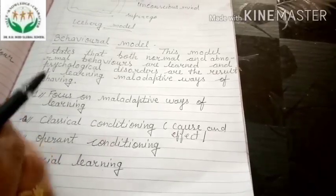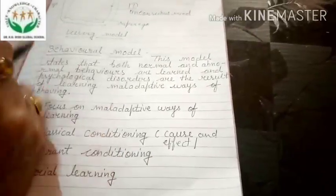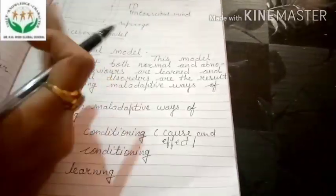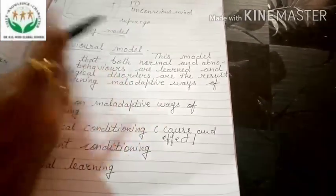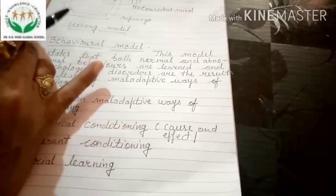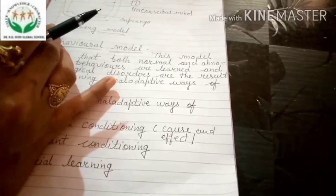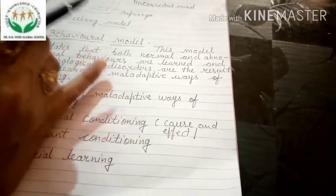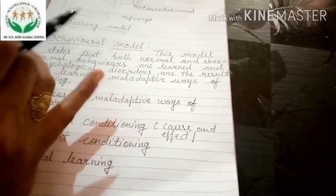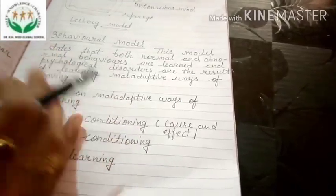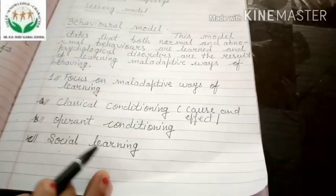This involves reinforcement: if you want a particular behavior to be repeated, you should give positive reinforcement — it may be in the form of appreciation, a prize, or anything similar. But if we want to stop any behavior, we have to use negative reinforcement, like punishment. Skinner believed that to repeat a behavior you should give a reward, and to stop a behavior from repeating, you should give punishment.